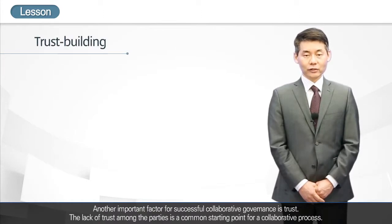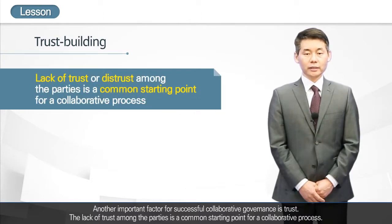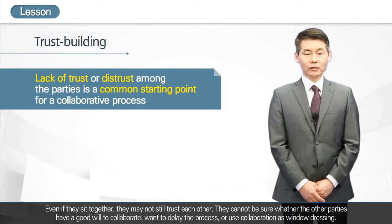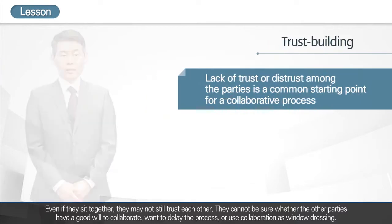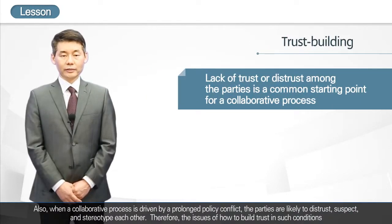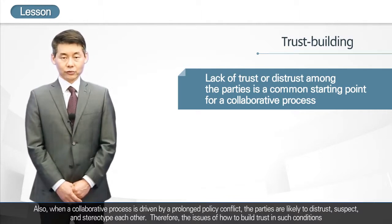Another important factor for successful collaborative governance is trust. The lack of trust among the parties is a common starting point for a collaborative process. Even if they sit together, they may not still trust each other. They cannot be sure whether the other parties have good will to collaborate, want to delay the process, or use collaboration as window dressing. When a collaborative process is driven by a prolonged policy conflict, the parties are likely to distrust, suspect, and stereotype each other.